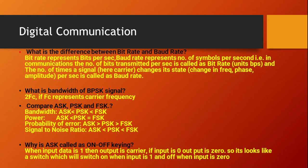What is the difference between bit rate and baud rate? Bit rate represents bits per second and baud rate represents the number of symbols per second. In communication, the number of bits transmitted per second is called bit rate (bps), and the number of times a carrier changes its state — that is, change in frequency, phase, or amplitude — per second is called baud rate.